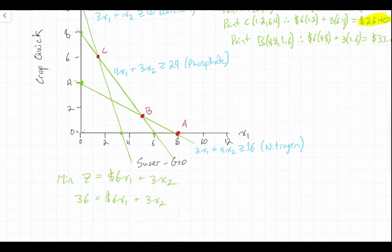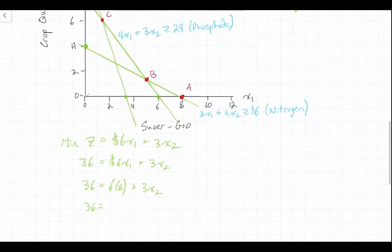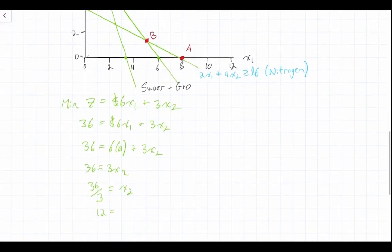So first we're going to plot our objective function on our graph so we need to find where this objective function line intercepts our x1 and x2 axes. So let's just set x1 equal to 0. So 36 equals 6 times 0 setting x1 equal to 0 plus 3x2, which means that, I won't skip a step, 36 divided by 3 equals x2. So therefore 12 equals x2.